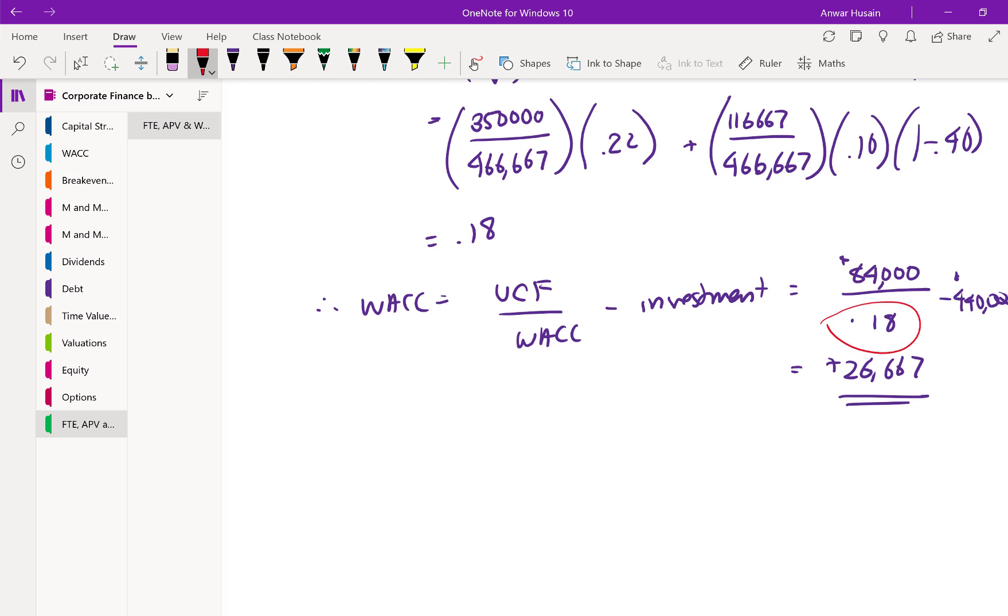So essentially, what it's saying is that when you add some debt, you've lowered your hurdle rate. And now it makes the project feasible to do. It wasn't profitable enough with an all equity valuation. Okay, so those are the three approaches that are different than the traditional NPV approach that's used in most textbooks.